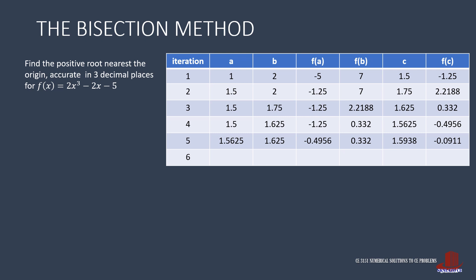The next starts with A as 1.5938 and B is still 1.625. F of A is negative 0.0911 and F of B is 0.332. C is then solved as 1.6094. Plug into the equation to have F of C as 0.1181. With a positive result, we replace this into B.